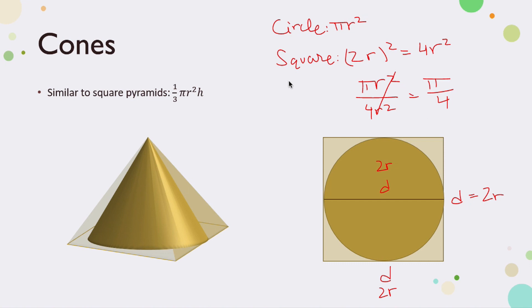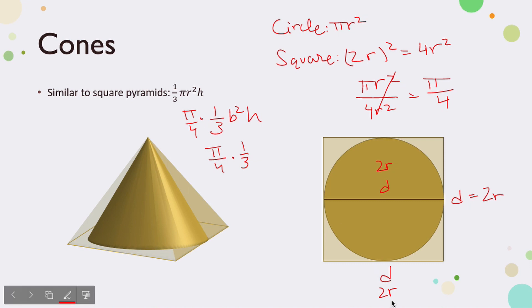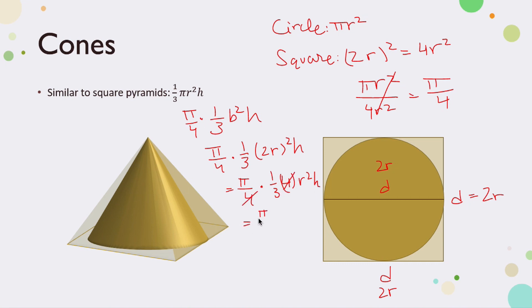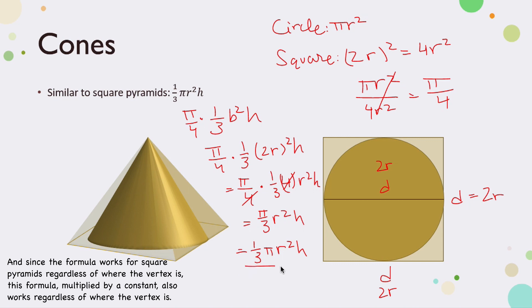If we take our formula 1/3 times b²h, where b is 2r, so b² is (2r)² = 4r², and multiply by π/4, we get π/4 times 1/3 times 4r²h. The fours cancel out, and we get π/3 r²h, which can also be written as 1/3 πr²h — which is our formula for a cone.